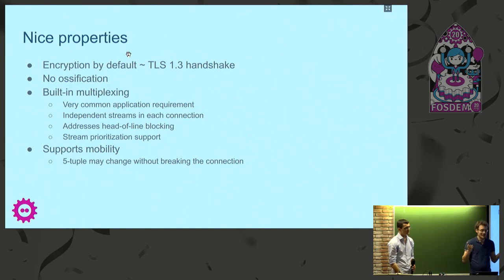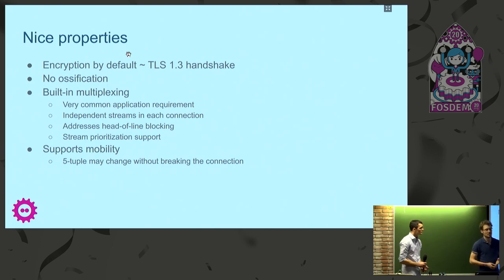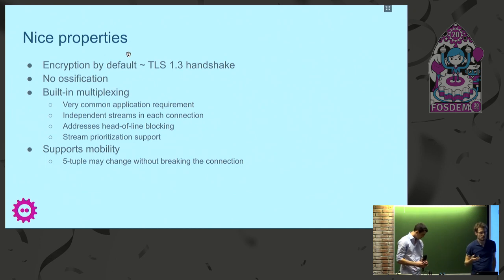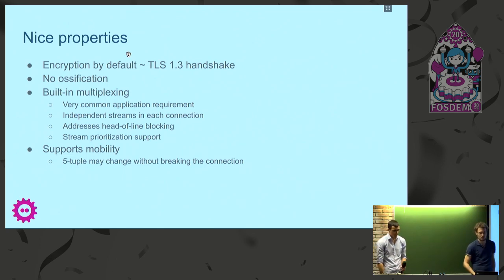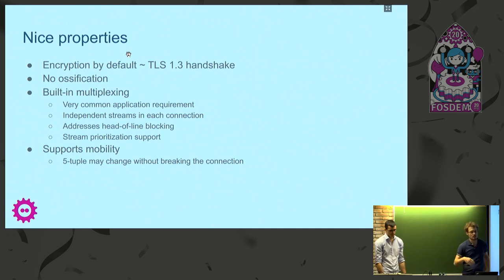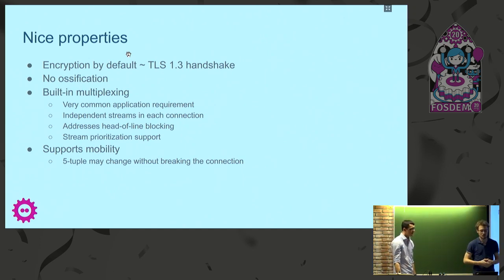Some nice properties it has: it provides encryption by default, retaking the TLS 1.3 handshake. It's designed so that it prevents ossification in the network — pretty much every bit of it is encrypted and encoded so that middle boxes cannot take decisions on the packet path. There is built-in multiplexing, a very common application requirement, and it provides independent streams in each connection to address this multiplexing and head-of-line blocking. It also supports some kind of stream prioritization.